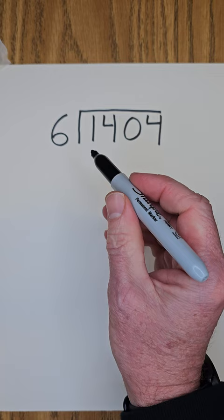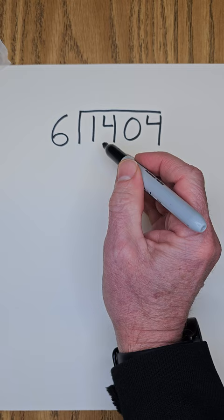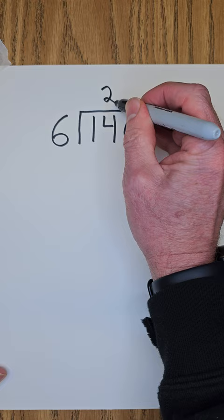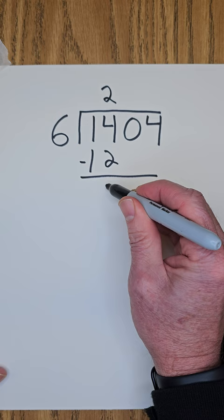First of all, can I put 6 into 1? No, you can't. Can I put 6 into 14? Yep, you can do that. So how many times can I put 6 into 14? 2. So let's put 2. 2 times 6, 12. Do a little subtraction right there. 4 minus 2 is 2.